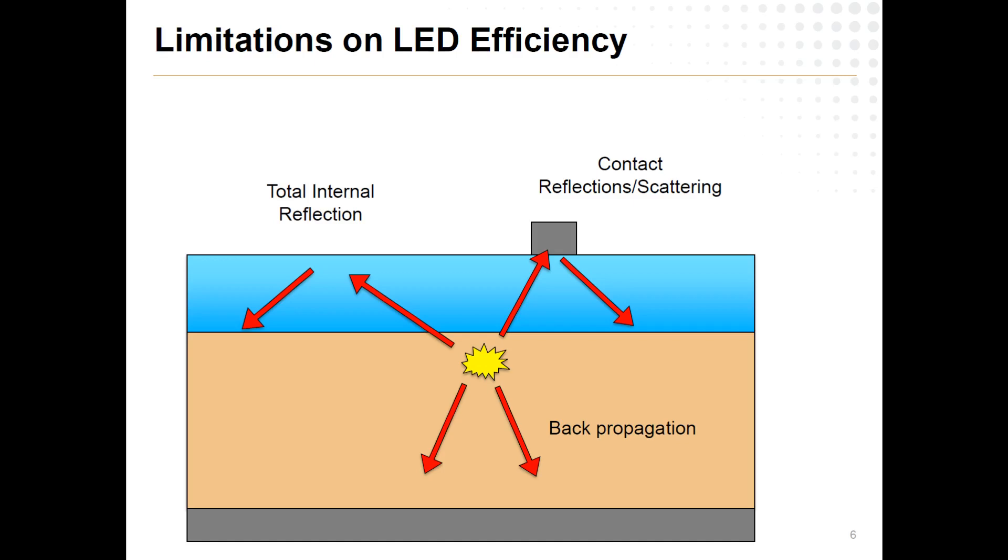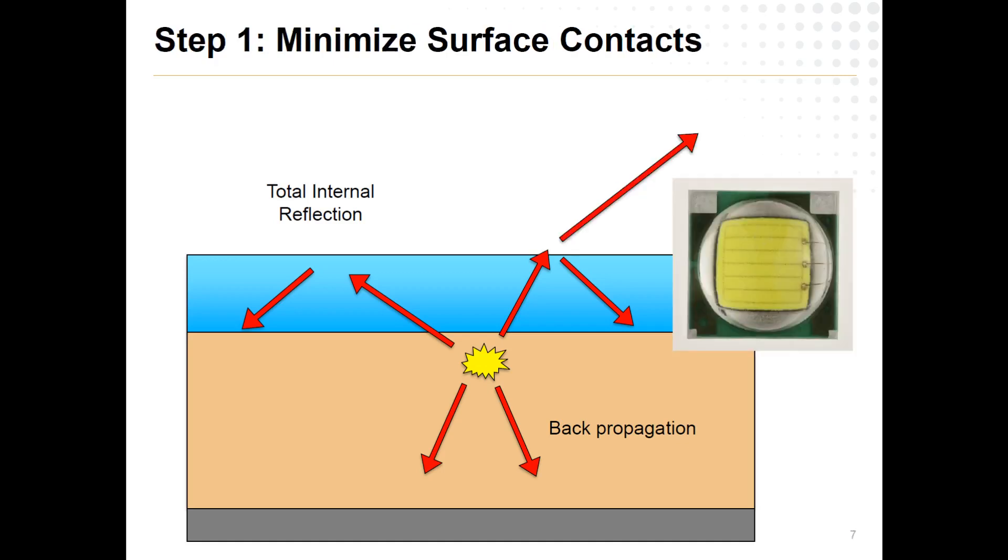You have your top contacts up here, of course, because I have to blow current through it. But then I have the problem of Fresnel reflection here at the surface. So the same problem where I would get light bouncing off the top, light's going to want to bounce from the bottom as well. So first things first, we'll minimize our surface contacts. This is a fun little picture of an LED here where you can see here are the little contacts coming in. And then there's the surface contact in this little grid.